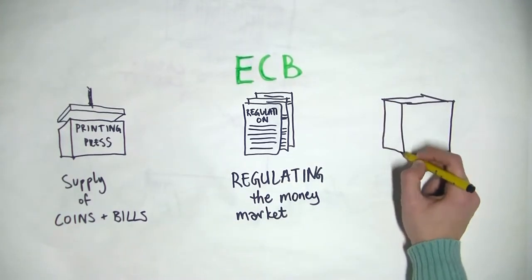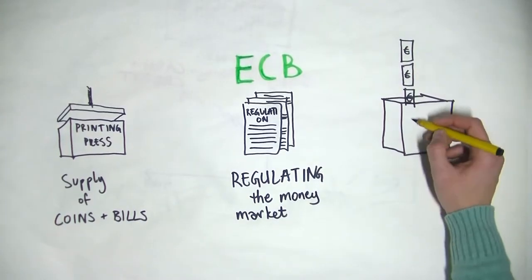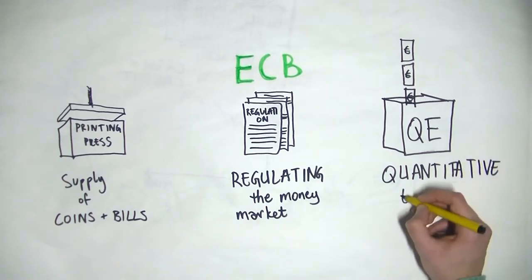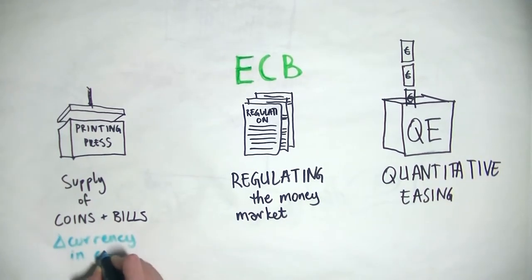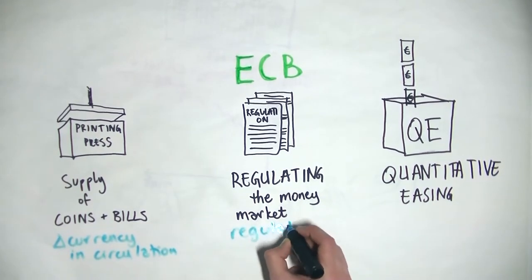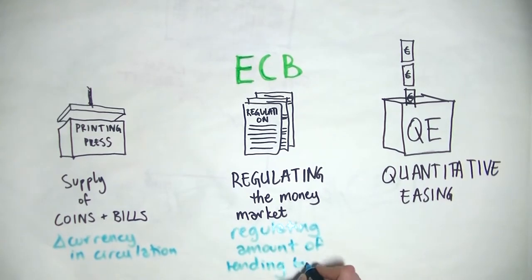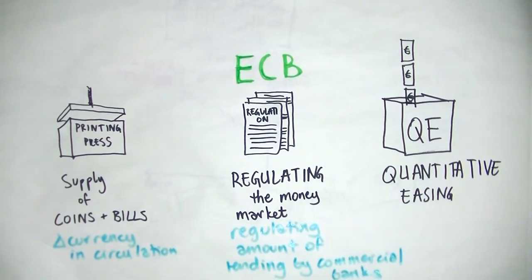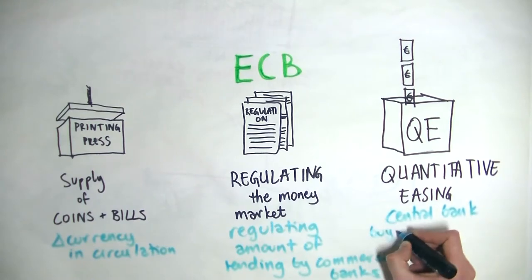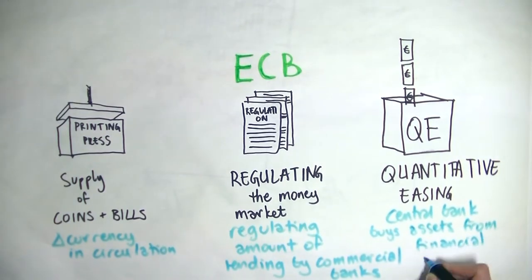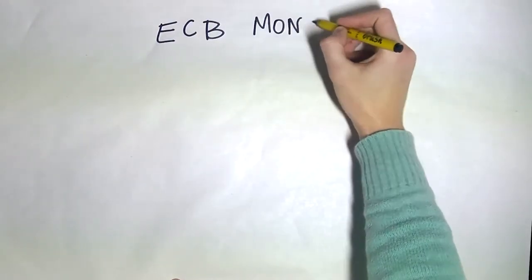A more recent method that the ECB has implemented is quantitative easing, which is when central banks buy government bonds or other assets from financial institutions, such as commercial banks, in order to stimulate spending. Buying bonds is similar to lending money to an institution. This leaves them with lots of cash to spend and invest, and thus increases inflation without the need of changing interest rates.